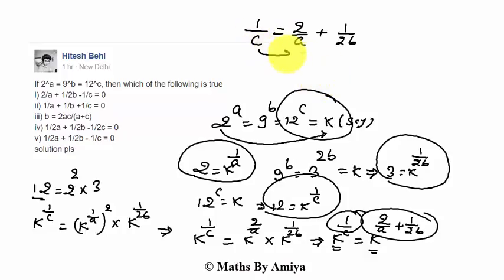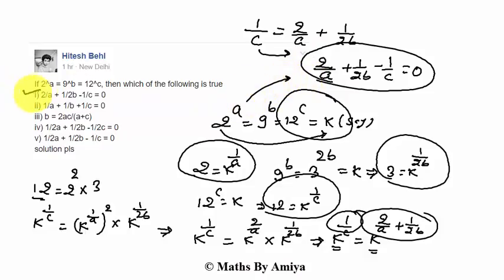If we move C to that side, 2 by A plus 1 by 2B minus 1 by C equals 0. So this is our outcome from the given input. So our answer is nothing but A.